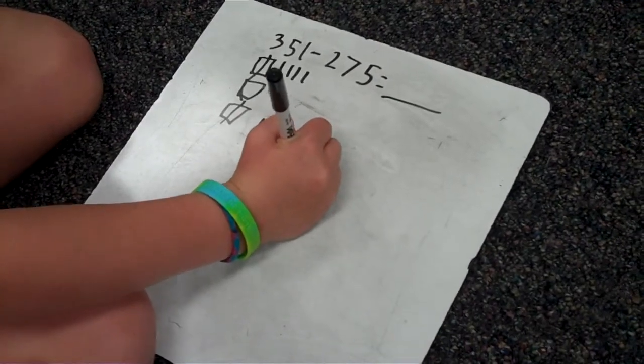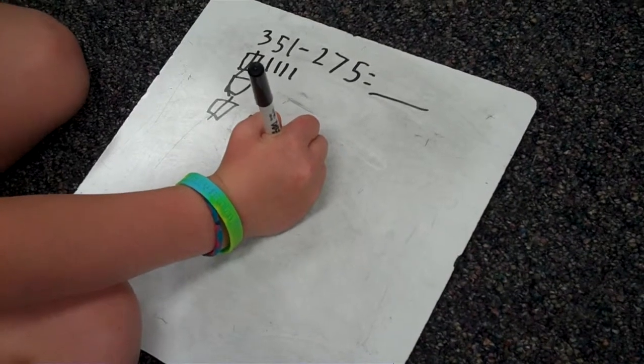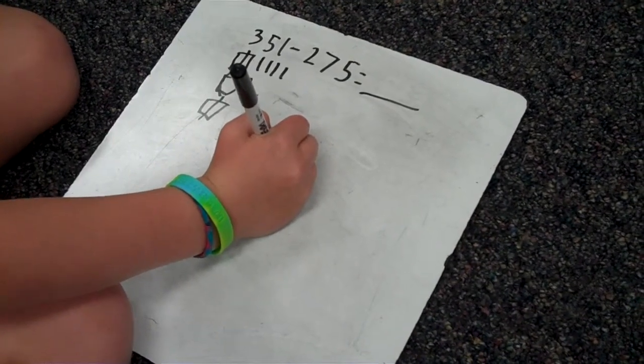When you say you can't take away, so you were trying to take that seven away from which number there? Five, but you can't do it, so then you have to borrow. Why can't you do it? Because five is less than seven. Very good.